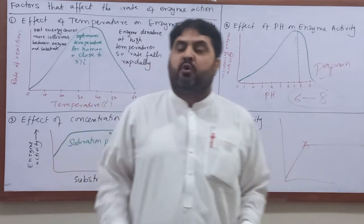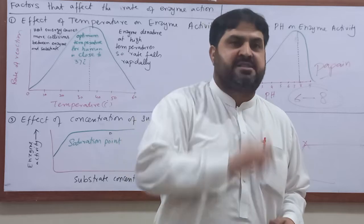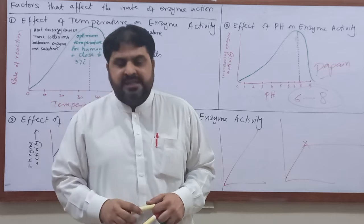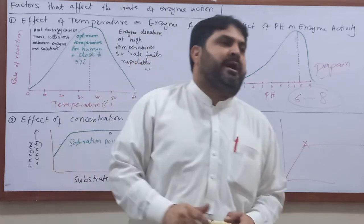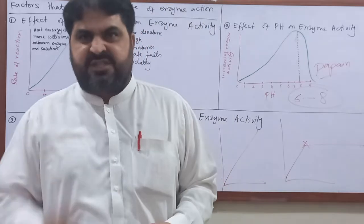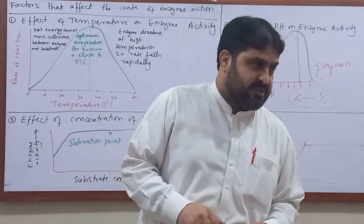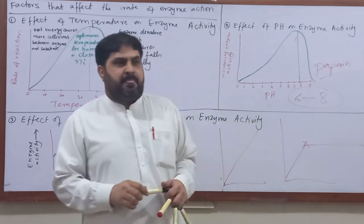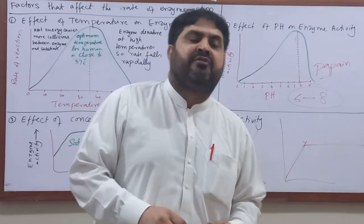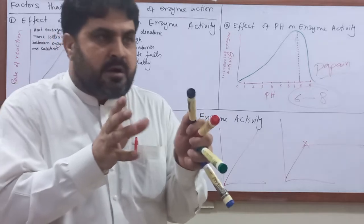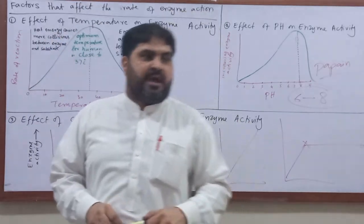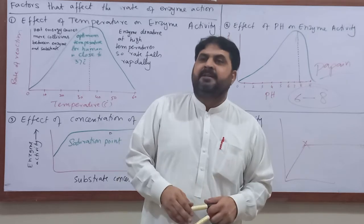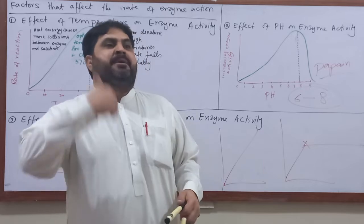Every body part releases enzymes at a specific concentration. For example, salivary amylase is released at 0.1 to 0.4 milliliters per minute. If enzyme concentration is constant and substrate is increased, to double the rate, you need to double the enzyme. When enzyme is increased, the active site factor also increases.